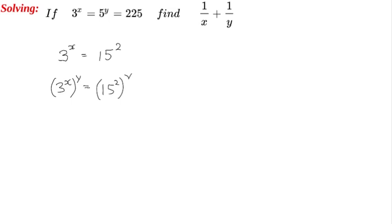This will give us 3 to the power of xy, applying the multiplication rule for powers, and 15 to the power of 2y on the other side. We're going to call this equation 1.